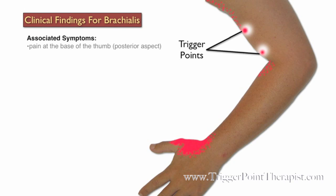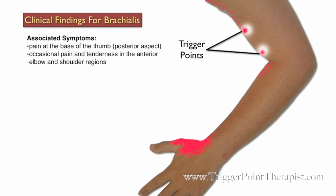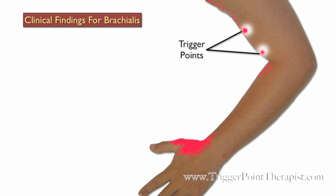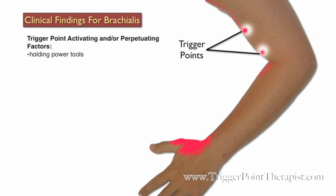Here are the clinical findings for the brachialis trigger points. Clients with active brachialis trigger points will typically complain of pain at the base of the thumb on the posterior side, occasional pain and tenderness on the anterior elbow and shoulder area, and sometimes numbness and tingling in the thumb because of the entrapment of the superficial cutaneous branch of the radial nerve. Activating factors for the brachialis trigger points include holding power tools, carrying groceries, and playing tennis.